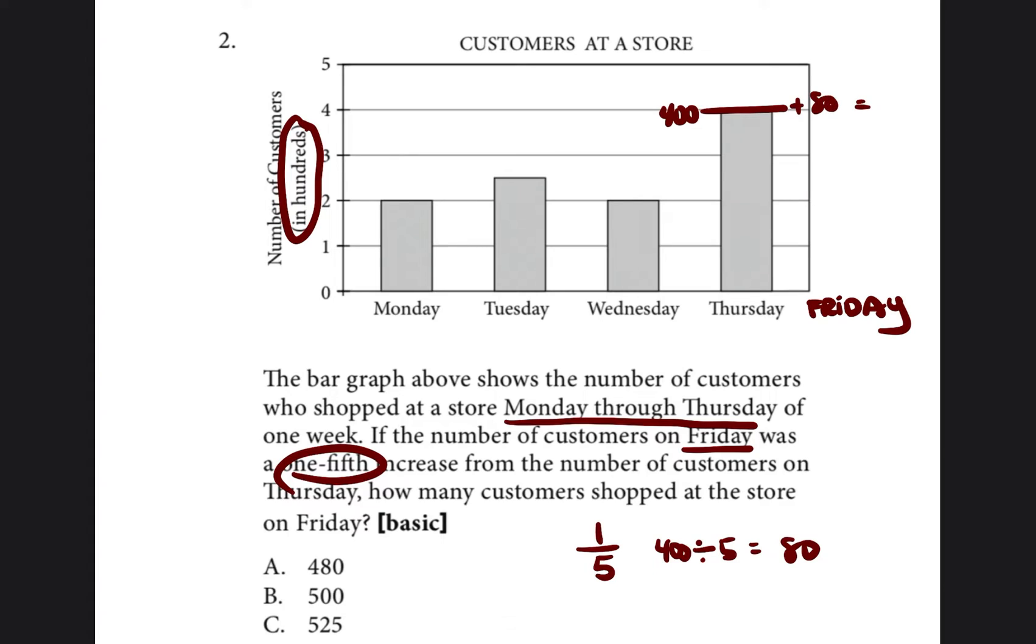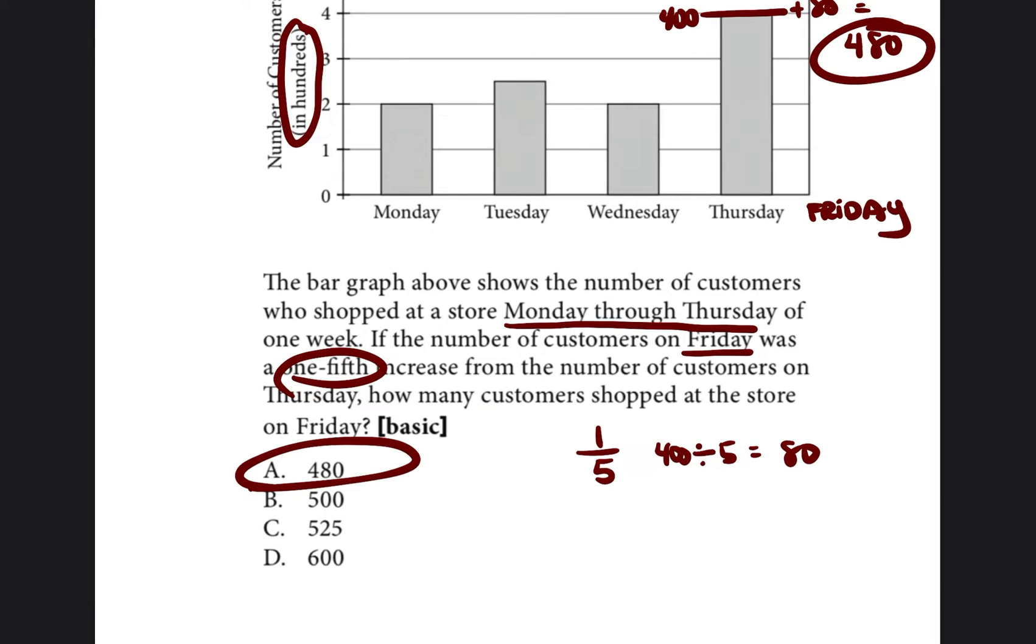So there would be plus 80 customers. 400 plus 80 is 480. So there'll be 480 customers on Friday.